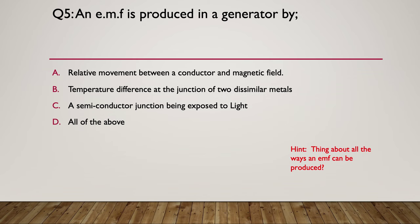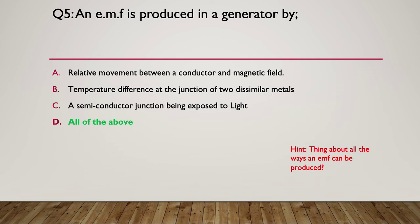Think about all the ways an EMF can be produced and list them off. The answer is D: all of the above. You get an EMF by moving a conductor in a magnetic field, from a temperature difference at the junction of two dissimilar metals — a thermocouple — and from a semiconductor junction exposed to light, as in a photovoltaic cell.